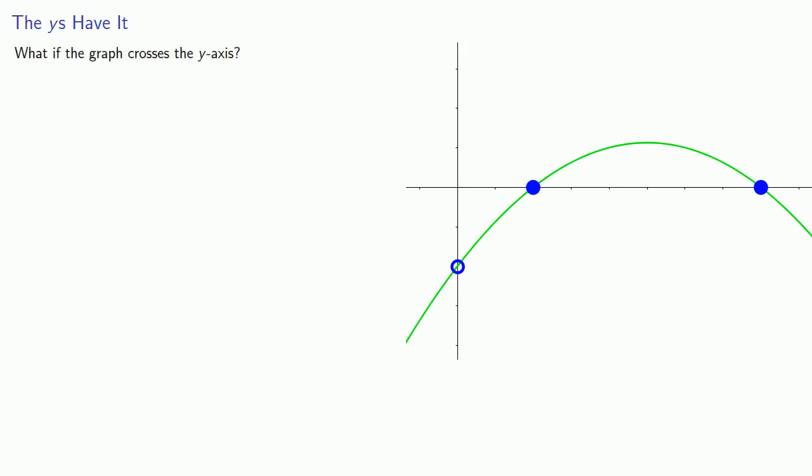What if our graph crosses the y-axis? To get to the y-intercept, start at the origin, go some distance k vertically, but go distance h equals 0 horizontally. Don't move left, don't move right. And this takes us to the point (0, k).